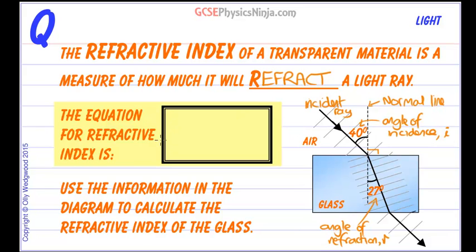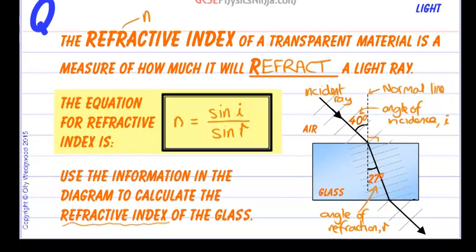We can also look to another mathematical relationship which links the refractive index, given the symbol n, to the angles, because the angles depend on how fast the ray is travelling. Here's your equation for the refractive index: n equals the sine of the angle of incidence divided by the sine of the angle of refraction, sine r. We need to use the information in the diagram to calculate the refractive index of the glass using this equation.